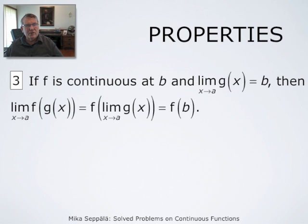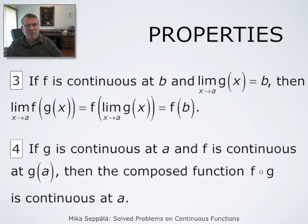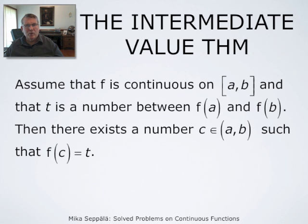If f is continuous at b and the limit of g(x) as x approaches a is b, then the limit of f composed with g evaluated at x as x approaches a is f evaluated at the limit of g(x), which is f at b. From this it follows that if g is continuous at a and f is continuous at g(a), then the composed function f composed with g is continuous at a. So composed functions of continuous functions are continuous.